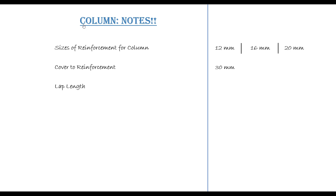Another important thing is the lap length. According to the BS code, this actually depends on the strength of your reinforcement. But because a column is a compression member, the lap length is taken to be 50D, where D is the diameter of the reinforcement. So if you are using a bar size of 20mm, the lap length is going to be 50 times 20.